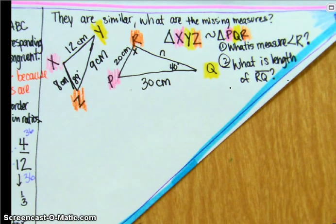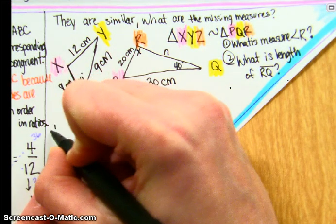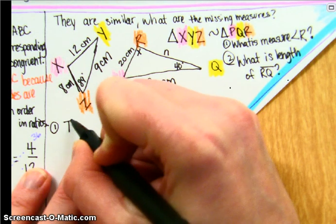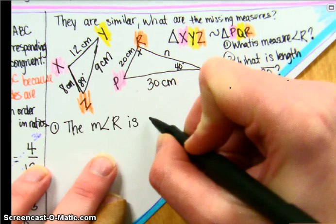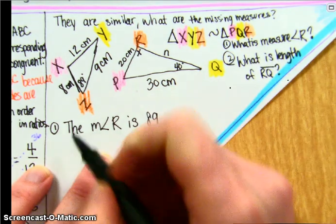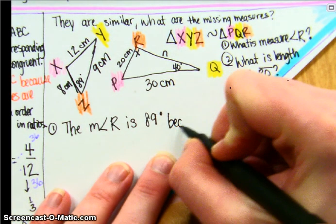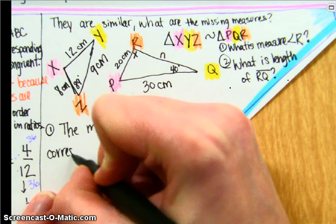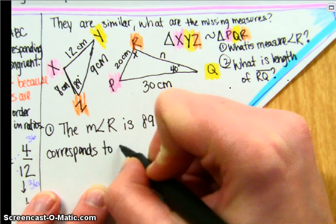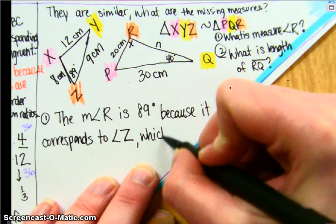So if you are aware that corresponding angles are congruent on similar figures, then you can answer number one by saying the measure of angle R is 89 degrees, because it corresponds to angle Z, which has the measure of 89 degrees.